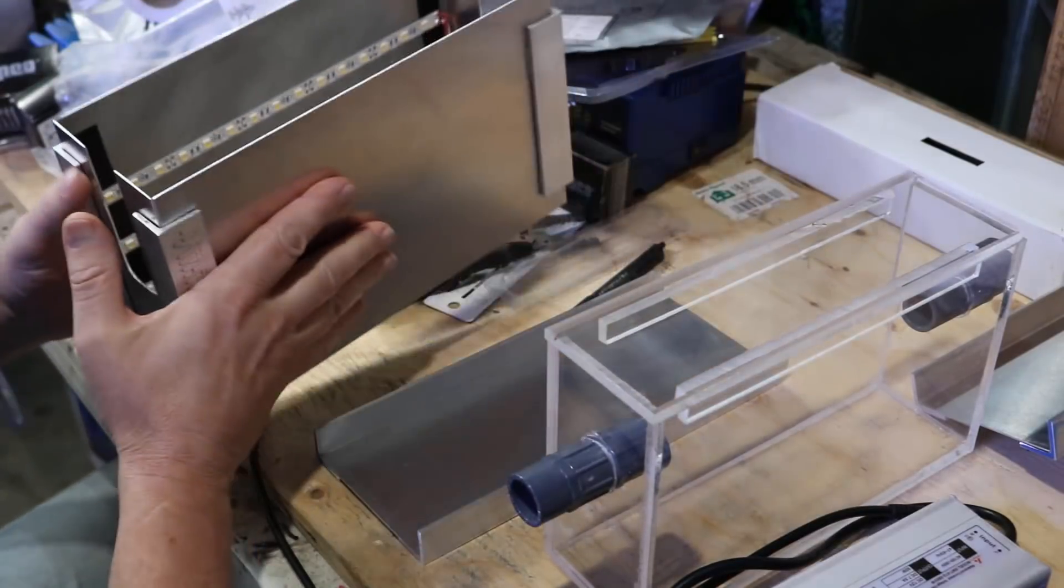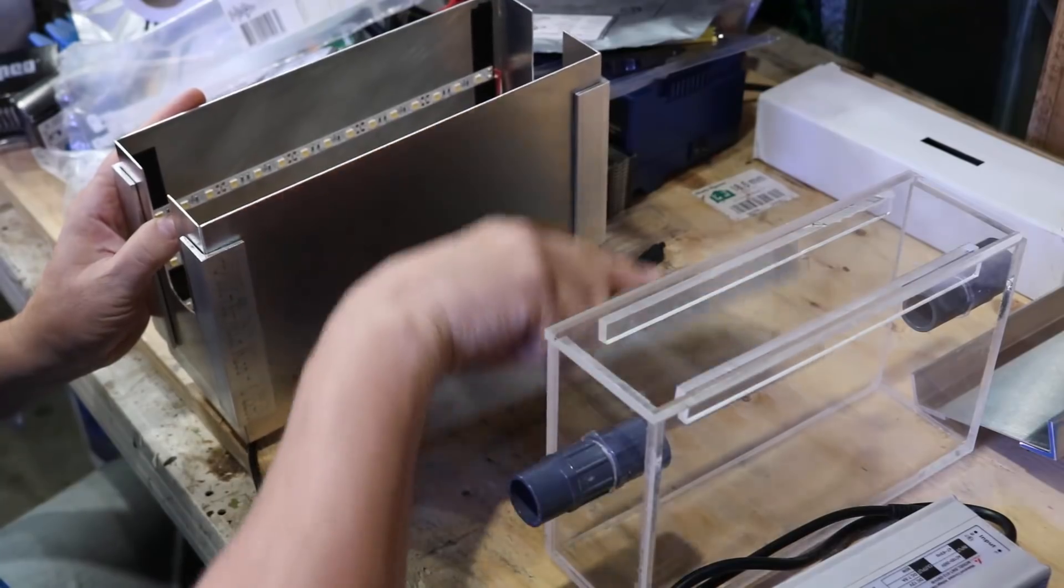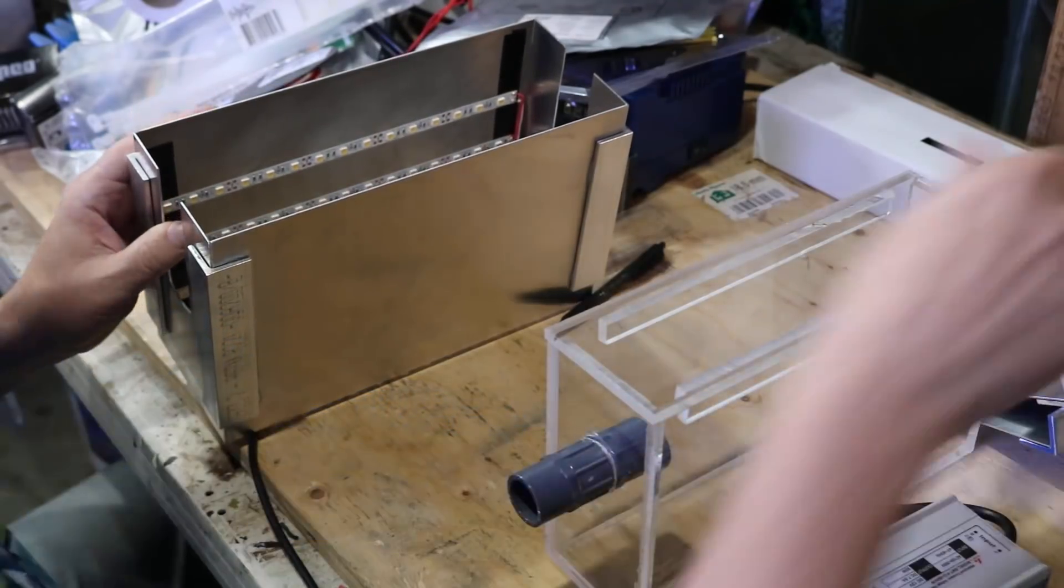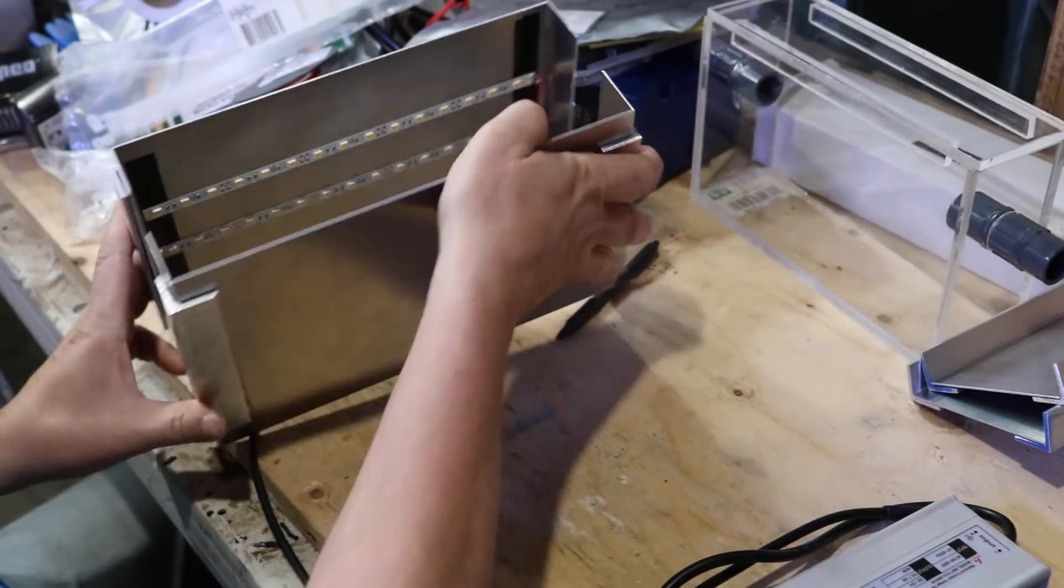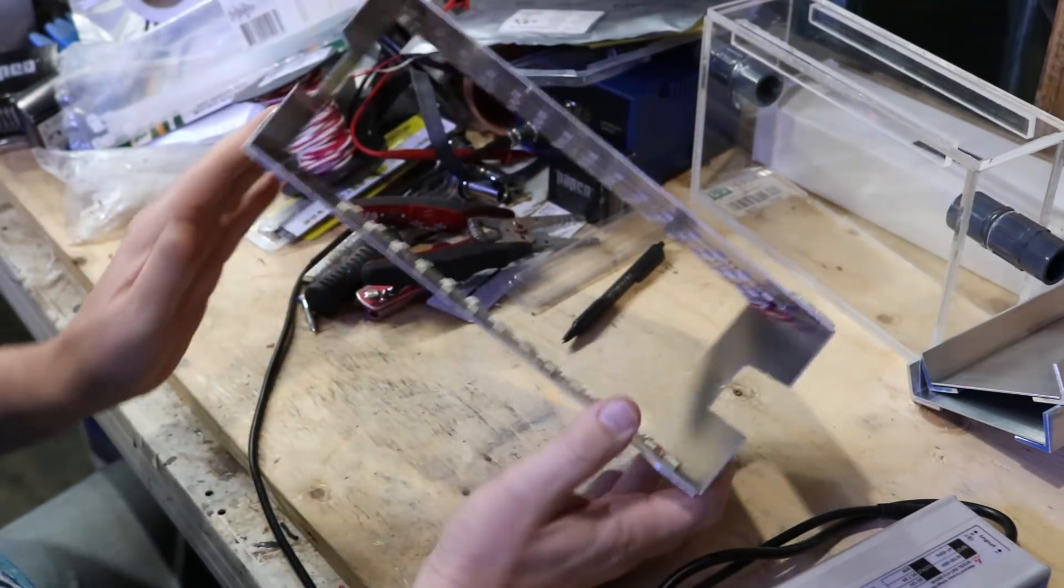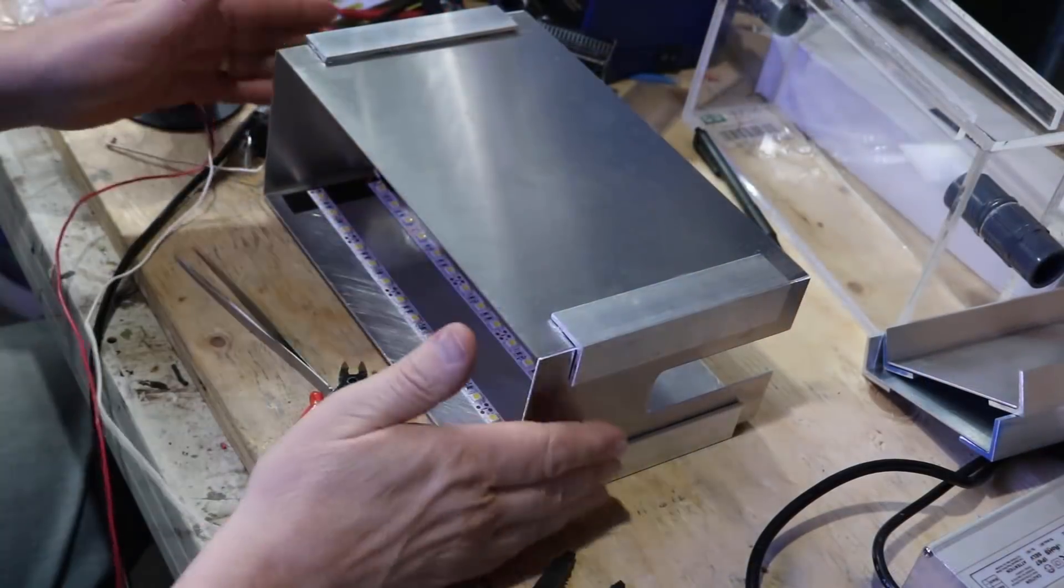Now, the box itself is going to stay modular like this. Normally, I think if I were doing this as a permanent build, I would probably glue the bottom on at least. But for the time being, I don't think it's going to be an issue. Like I said, I'm just testing this all out.